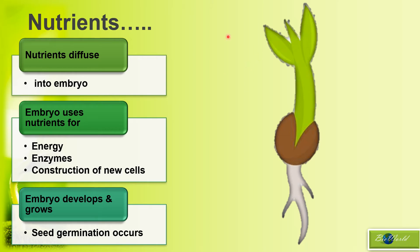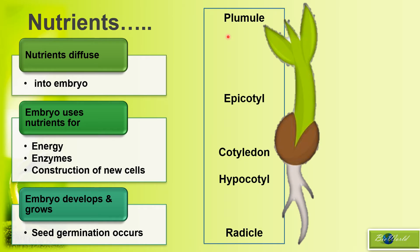Now let's look at the parts of the germinated seed. Besides the plumule, radicle, and cotyledon, I want to highlight two more labels: the epicotyl and the hypocotyl. 'Epi' means outer layer, just like epidermis or epithelium — so epicotyl is the layer above the cotyledon. Hypocotyl, I like to think of the word 'hiding' — the hypocotyl is hiding below the cotyledon. Understanding their positions is important for what comes next.